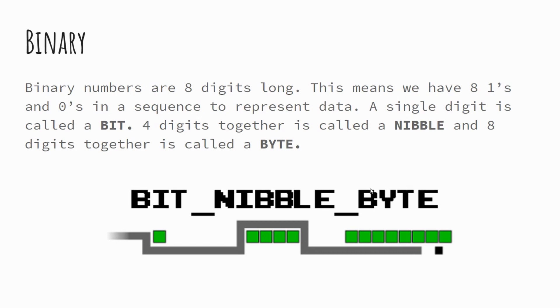Four bits together make up a nibble. Eight bits together make up a byte, and that becomes relevant when we look at characters in a future lesson. So: a single zero or one is a bit, four together is a nibble, and eight together is a byte.